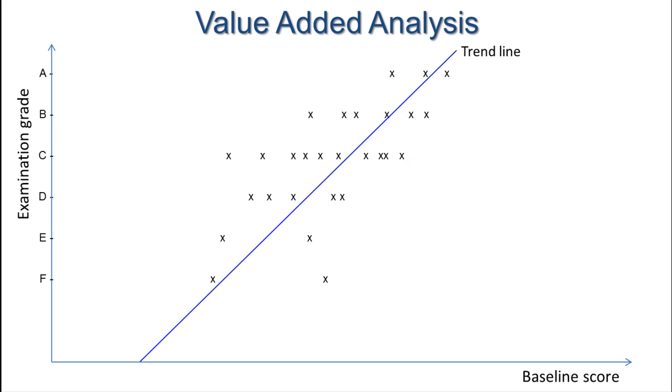Now, let's pick out a couple of individuals. Look at this student here. If we trace down to our horizontal axis, we can see where their baseline score would be, and that in turn gives us their predicted grade, which in this case is just above an F or between an E and an F. This student has achieved a grade C for this exam, so has done exceptionally well. We would call this positive value added.